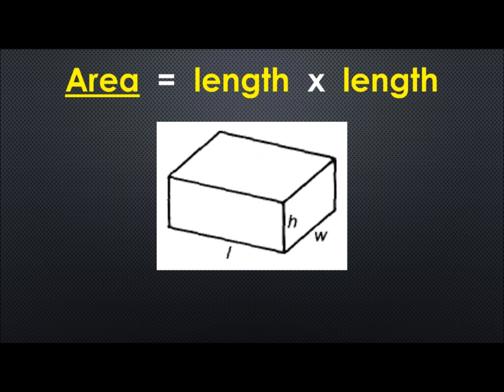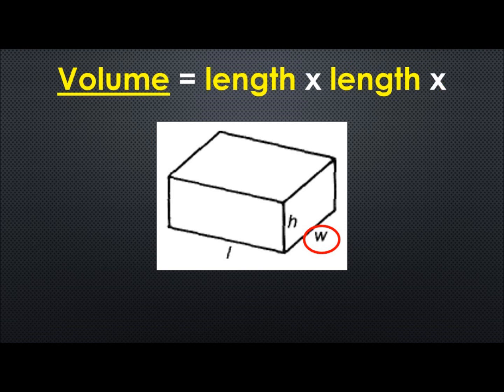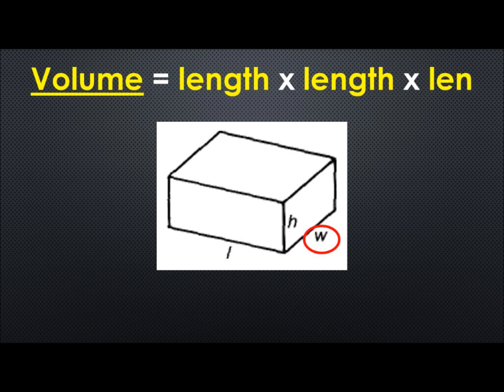Now we have a different shape and this shape right here has the side which we can use the area formula but it has an extra width over here or extra length. So we have to change our formula and move from area to volume because we're adding the extra length.